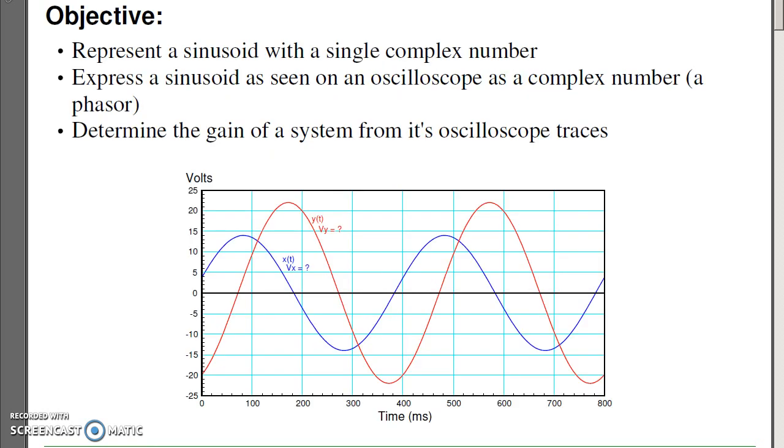The objective here is to represent a sine wave with a single number, albeit that number will be complex. I also want to express a sine wave that you see on an oscilloscope, like the waveform here. Express those as a complex number. And also, if this is a filter, where x is the input, y is the output, express the gain of that filter also as a complex number.